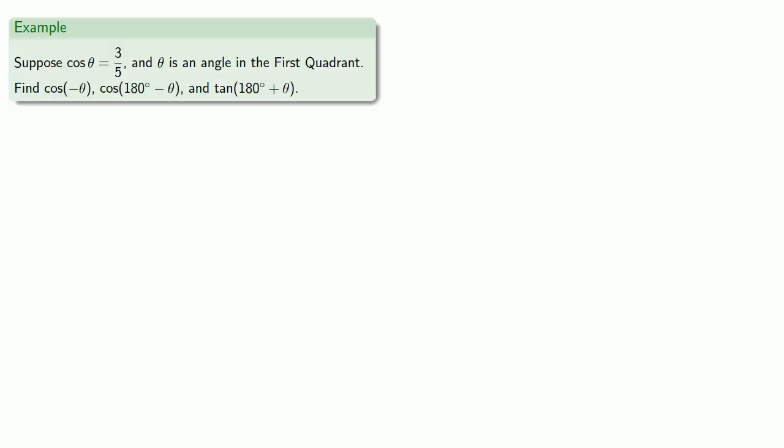For example, suppose that the cosine of θ is 3/5 and θ is an angle in the first quadrant. Can we find cosine of -θ, cosine of 180° - θ, and tangent of 180° + θ?